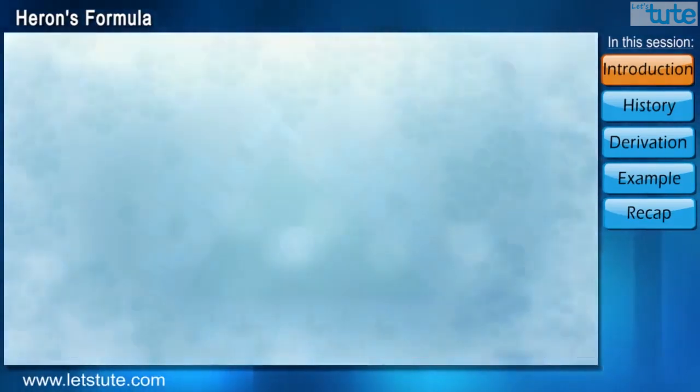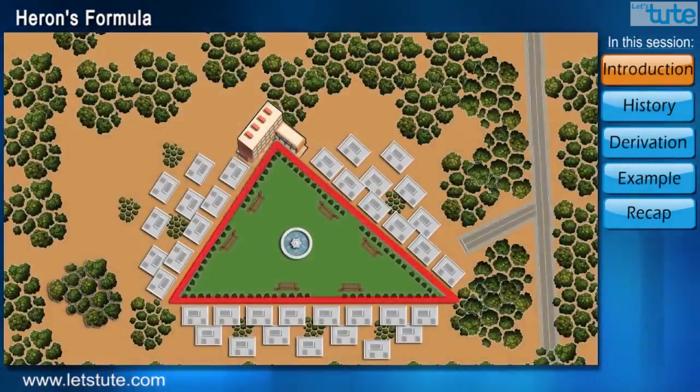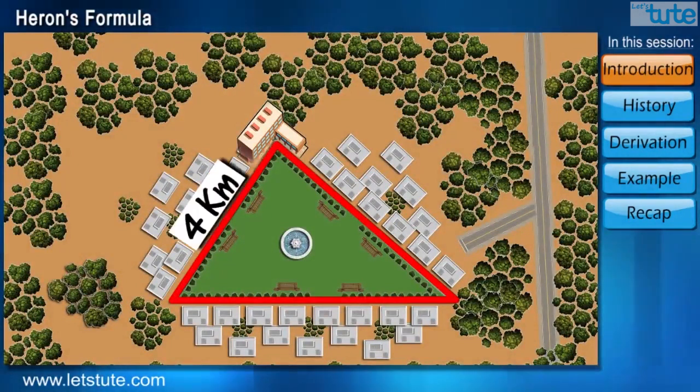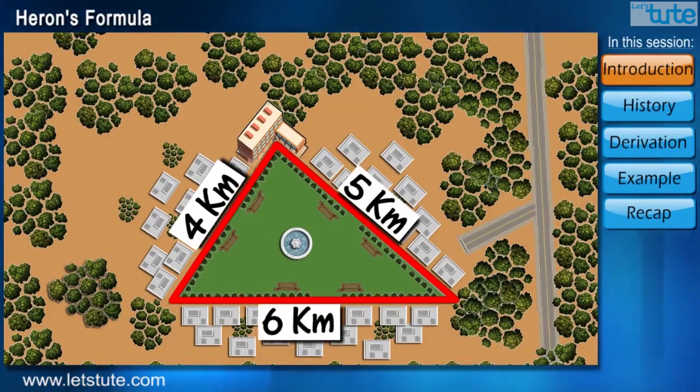Now, suppose if you have a huge triangular complex and we only know the length of each side of the complex. Let's say 4 kilometers, 5 kilometers and 6 kilometers.